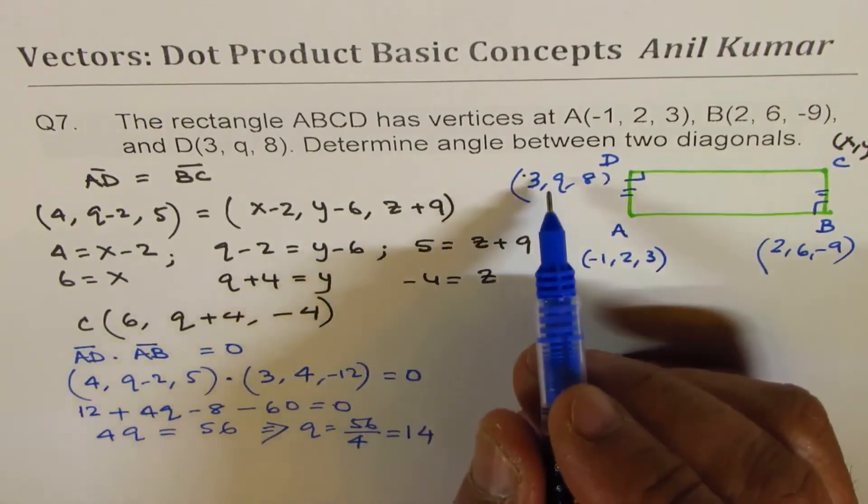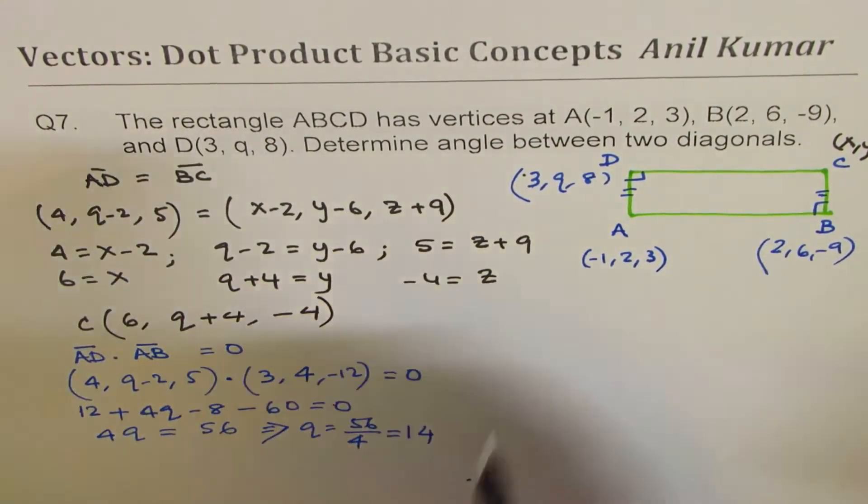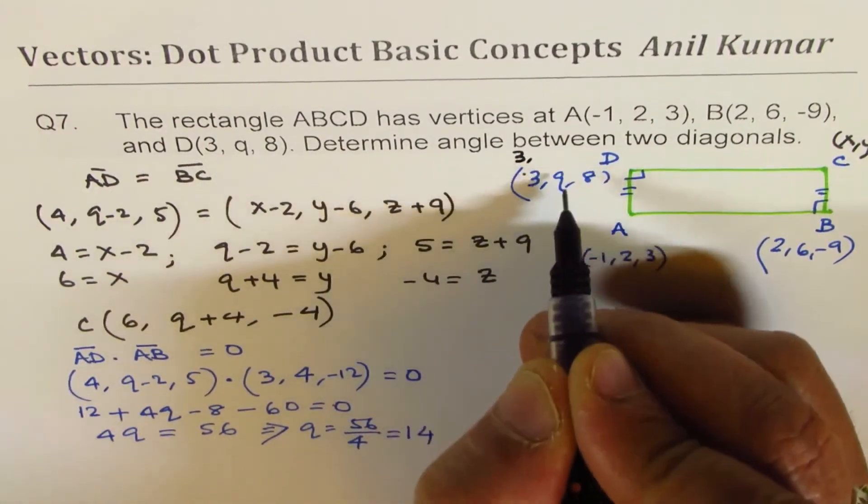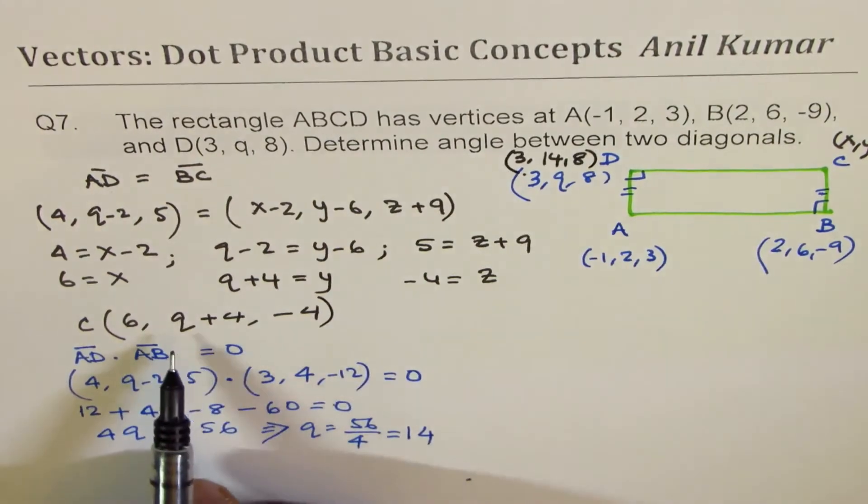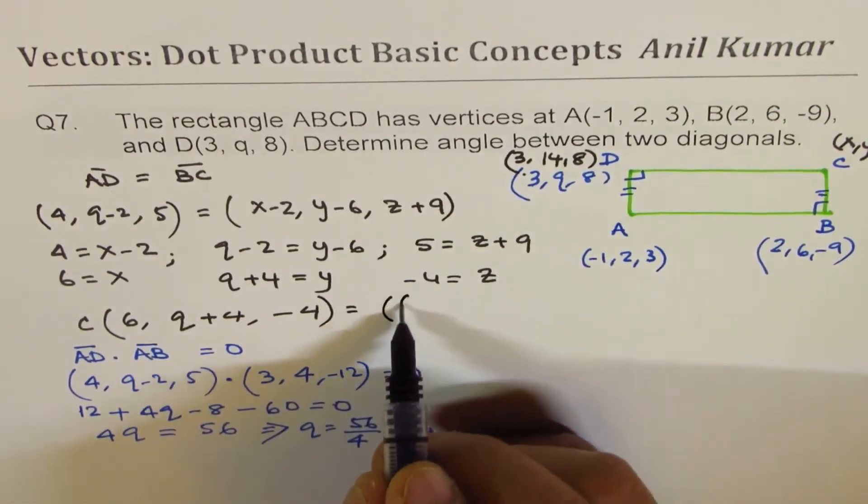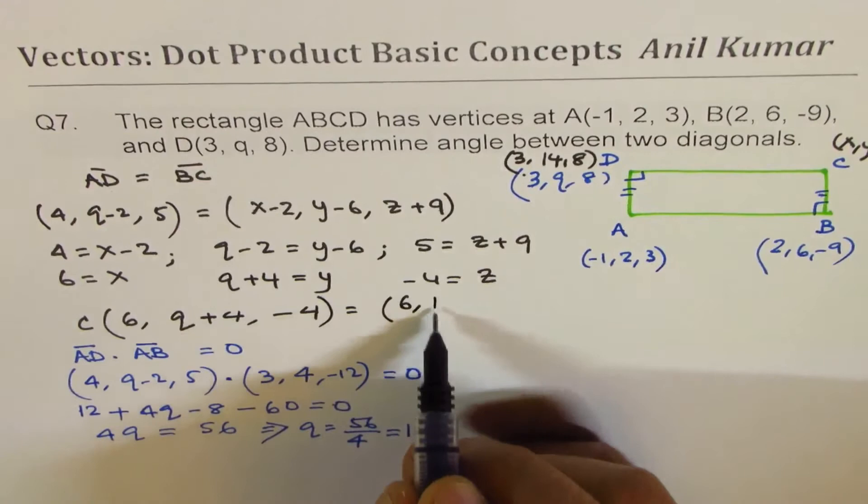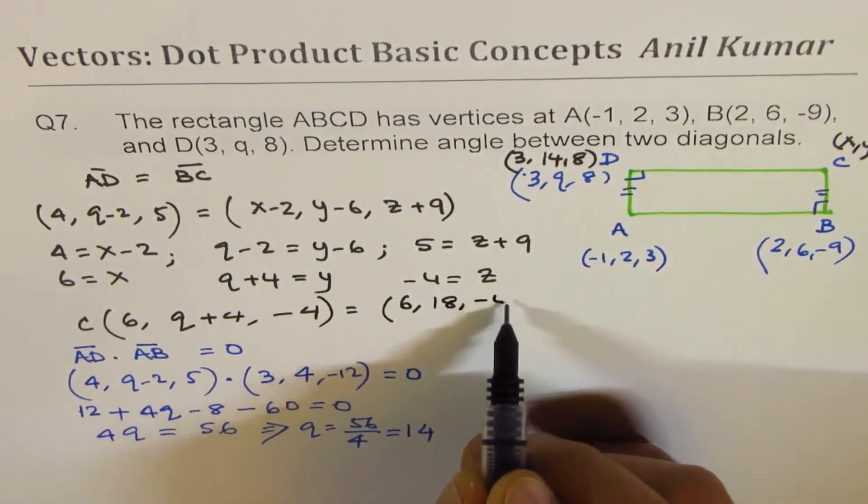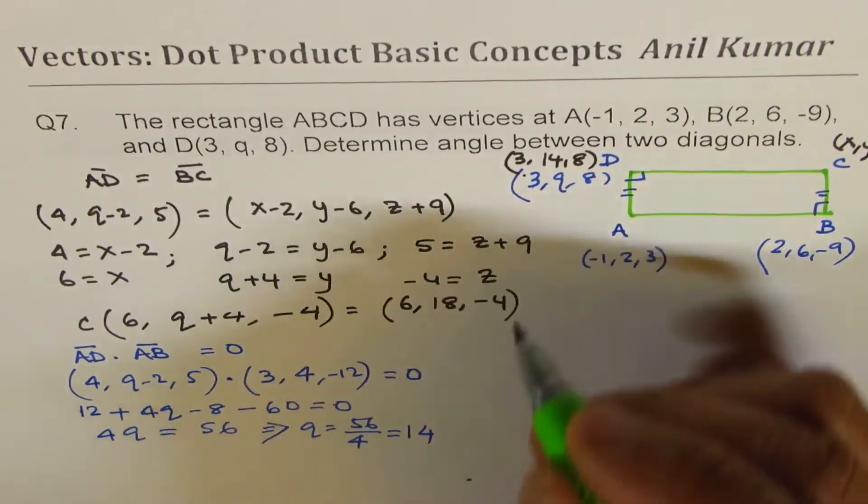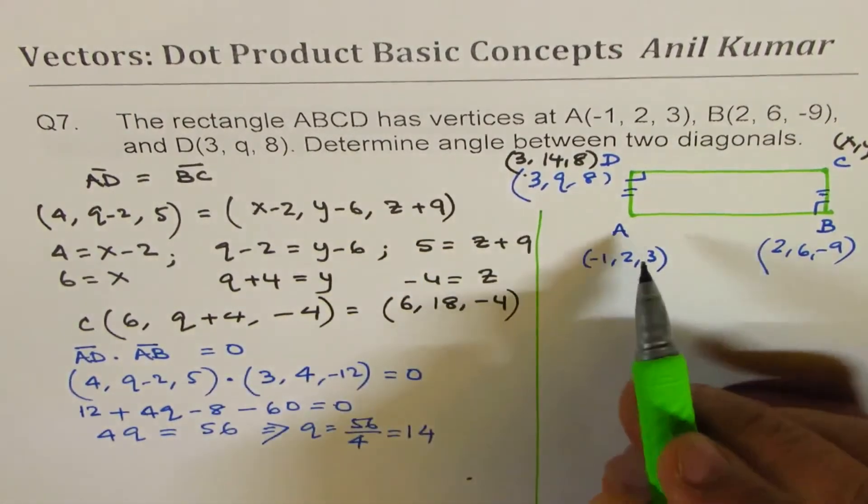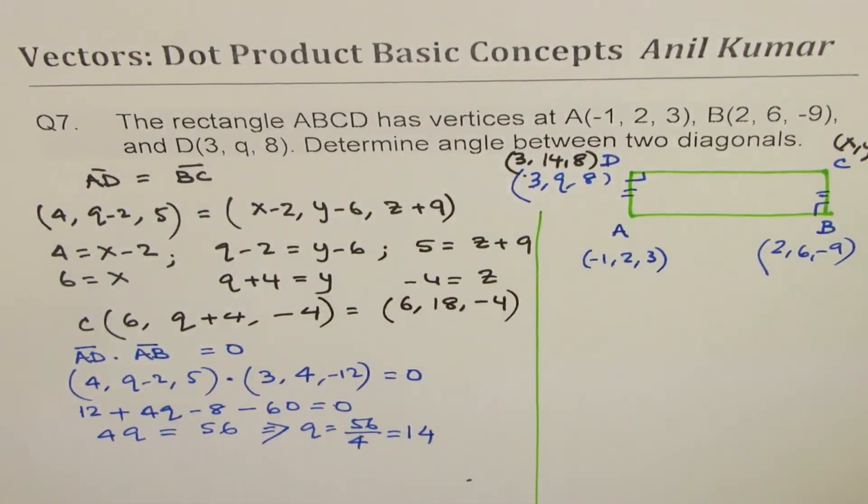Since we know now Q is 14, let me rewrite D as (3, 14, 8). And Q is 14, so C equals (6, 18, -4). So we know C now. Since we know C, we can now find the diagonals and the angle between them.